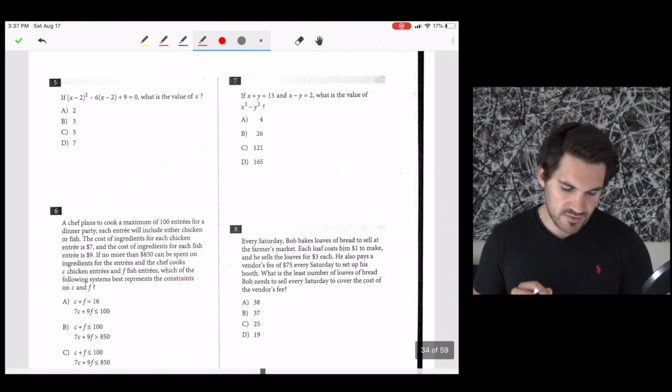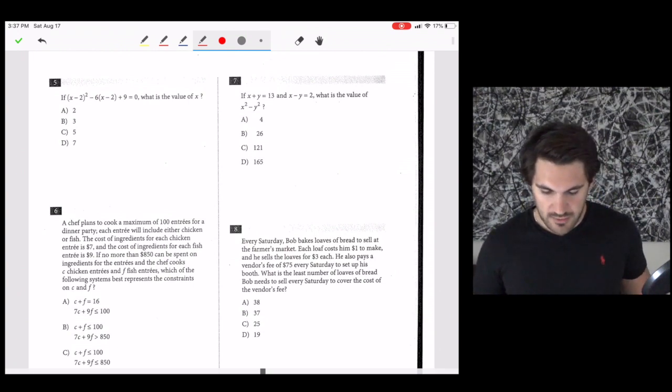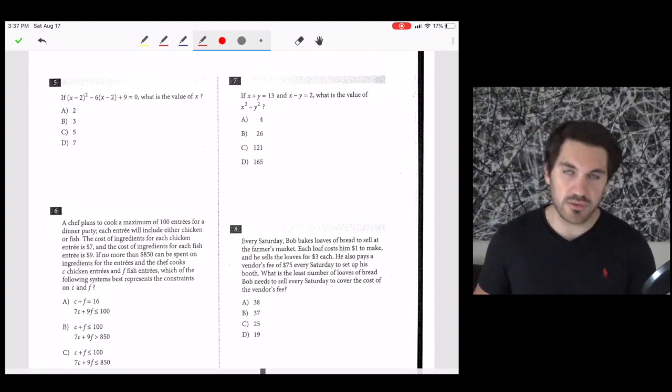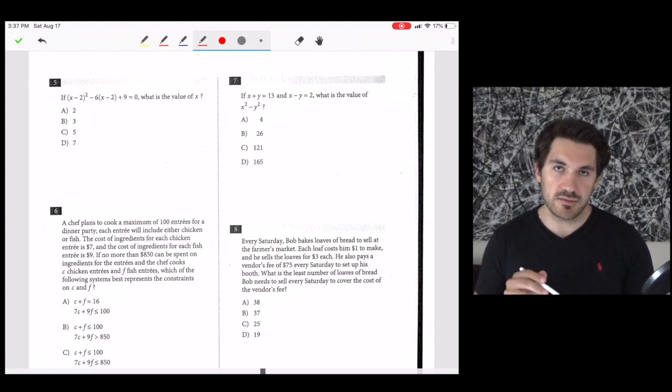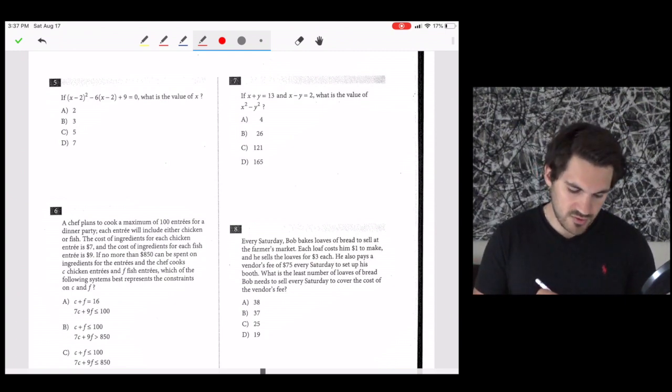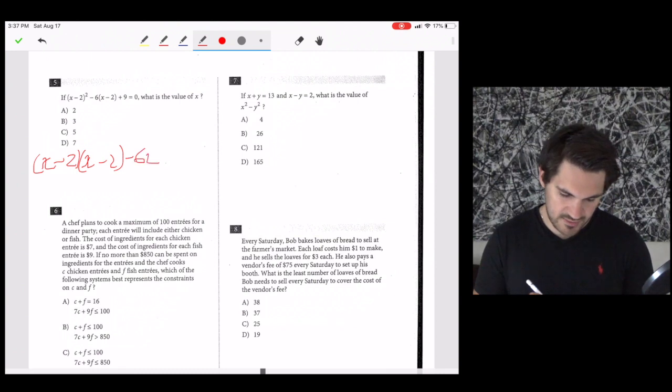Number five, if x minus 2 squared minus 6 times x minus 2 plus 9 equals 0, what is the value of x? In order to figure out the value of x, we could do two things. We could either plug the answer choices in, or we could foil out the x minus 2 squared. Let's foil out the x minus 2 squared. x minus 2 squared is going to get us x minus 2 times x minus 2 minus, and then I'll distribute the 6 times x minus 2,